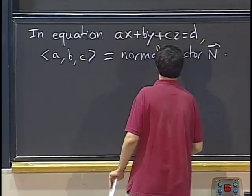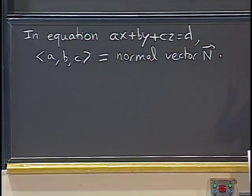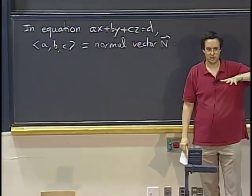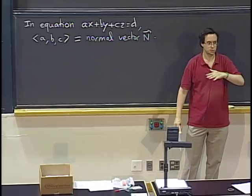In the equation ax plus by plus cz equals d, the coefficients a, b, c give us a normal vector to the plane. What matters most is finding the normal vector. If we know points in the plane, we can find the normal vector by taking the cross product of two vectors contained in the plane.